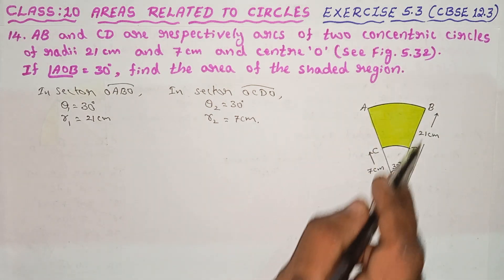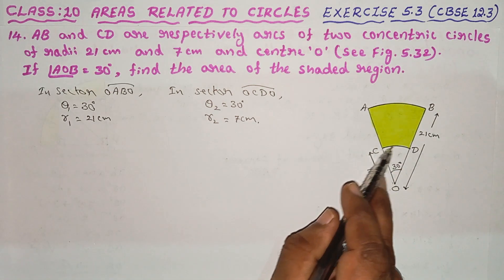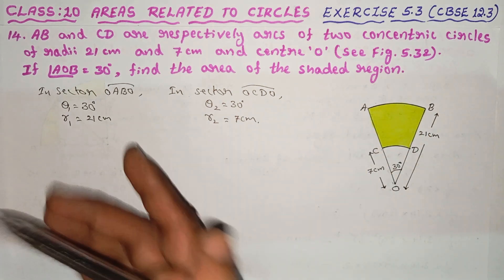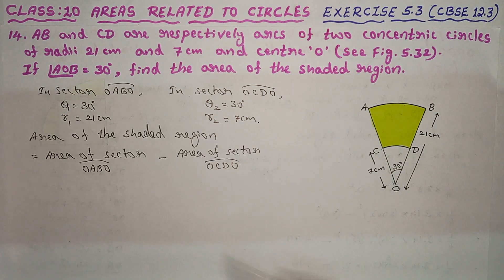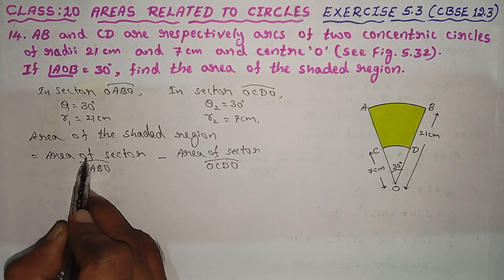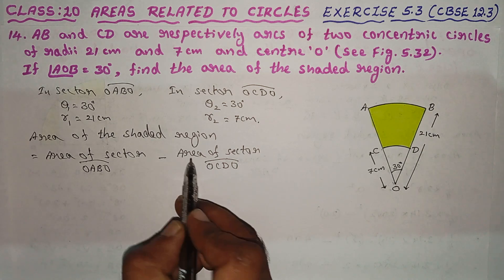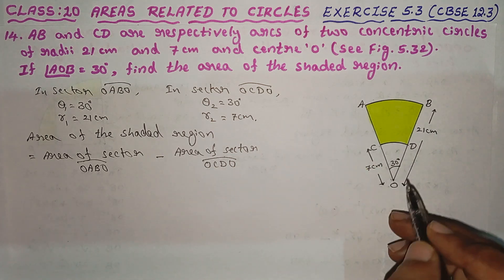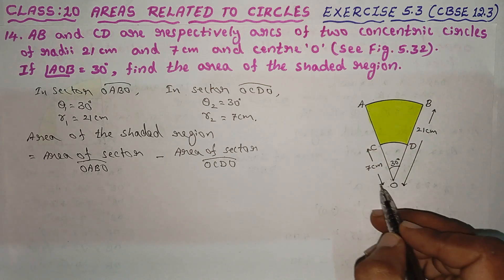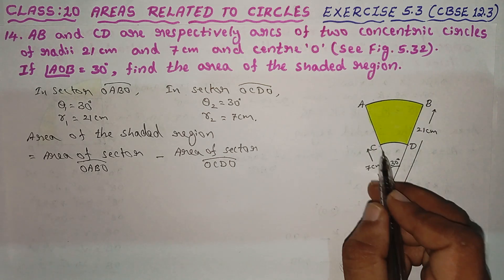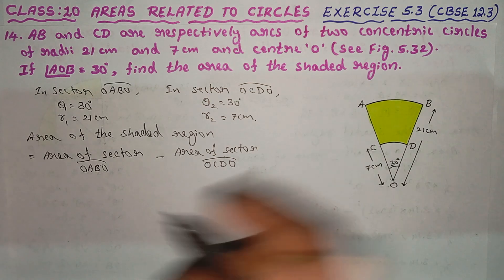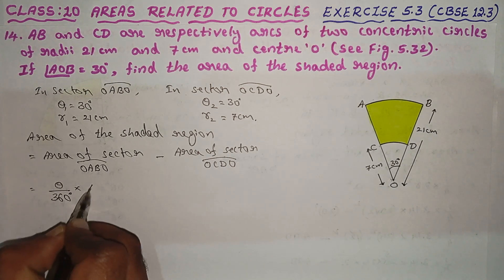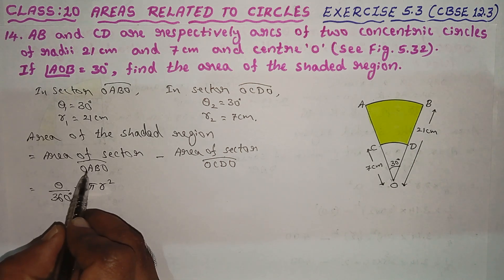Find the area of the shaded region. If you study the shaded region, we use the area of sector. The area of the shaded region is equal to area of sector OABO minus area of sector OCDO.